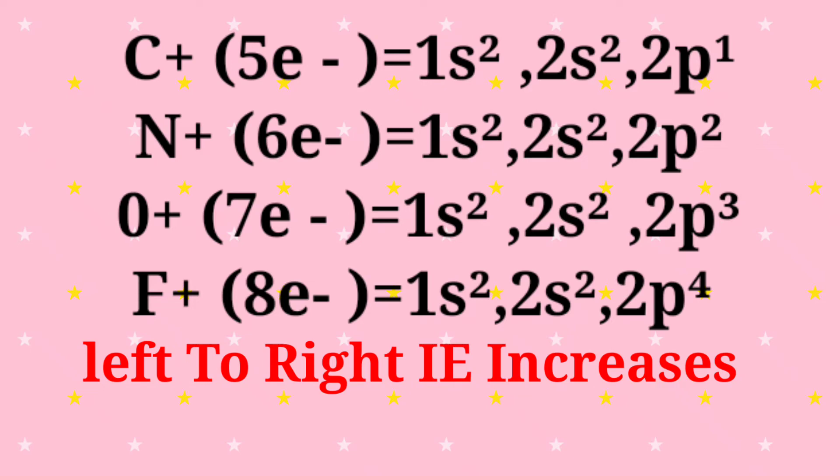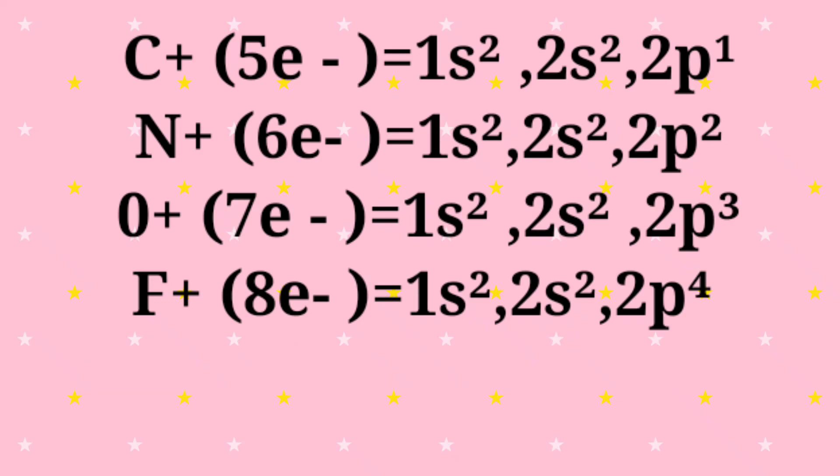Now, as we move from left to right, ionization energy increases. So fluorine's ionization enthalpy should be greater than oxygen. But this statement is not right. Oxygen's second ionization energy is greater than fluorine due to the half-filled configuration, and the half-filled configuration achieves extra stability, so electrons are not easily removed.